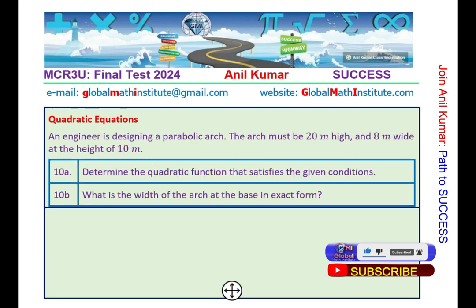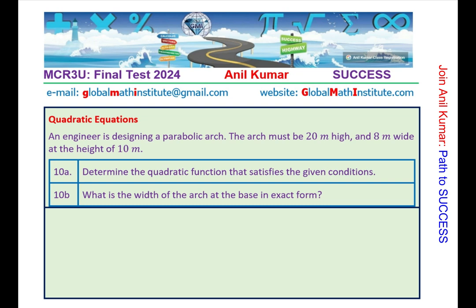Next question here is an application question. An engineer is designing a parabolic arch. The arc must be 20 meters high and 8 meters wide at the height of 10 meters. Determine the quadratic function that satisfies the given condition. Find the width of the arc at the base in exact form. Brilliant question. You can pause and answer this. We have many such questions in our playlist, so you can look for hints.